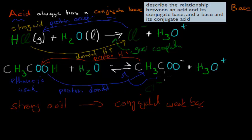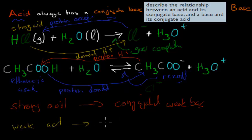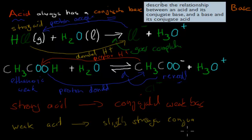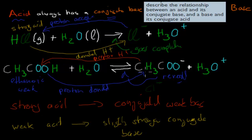There is a reversible reaction happening, and some of the conjugate base will reform the acid. So when it comes to weak acids, weak acids have a slightly stronger conjugate base. It doesn't have to be very strong, but the conjugate base of a weak acid is stronger than the conjugate base of a strong acid. So CH₃COO⁻ is stronger than the chloride ion, which means a bit more of it will go in the reversible reaction.